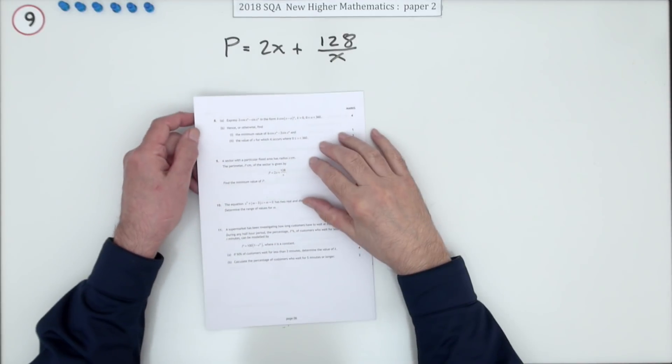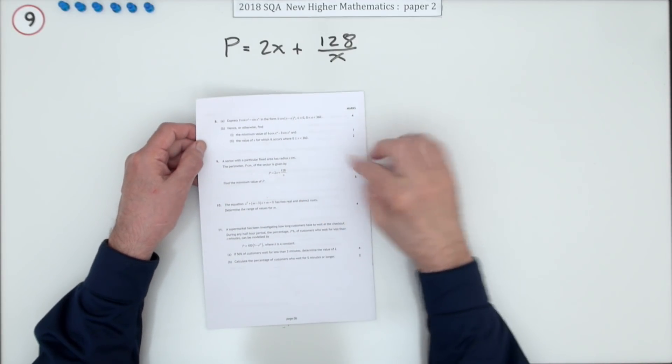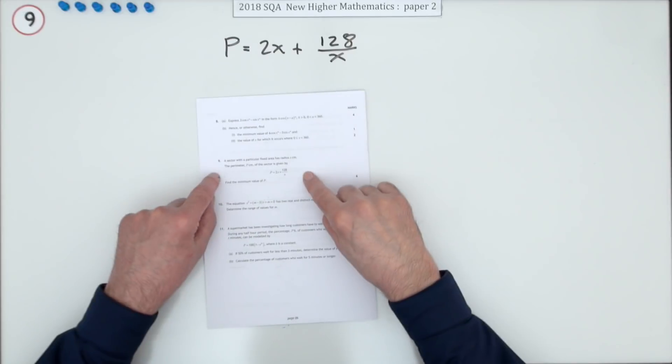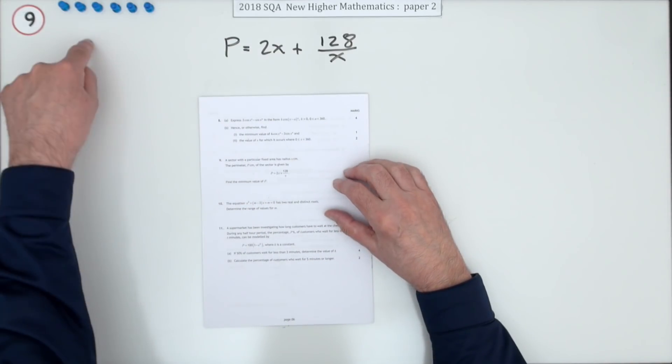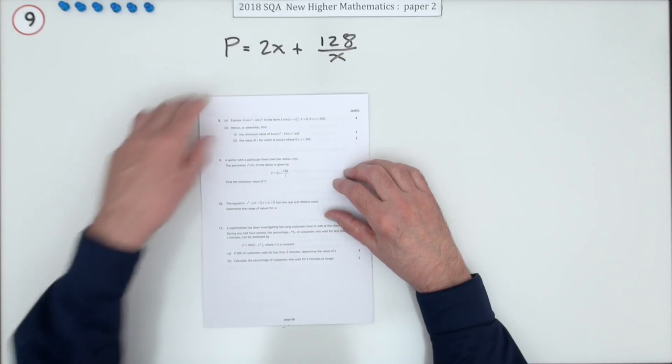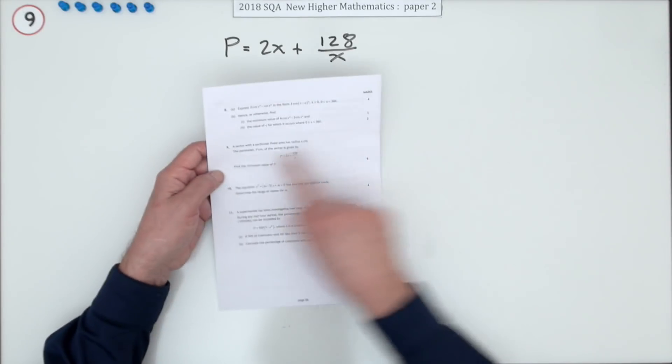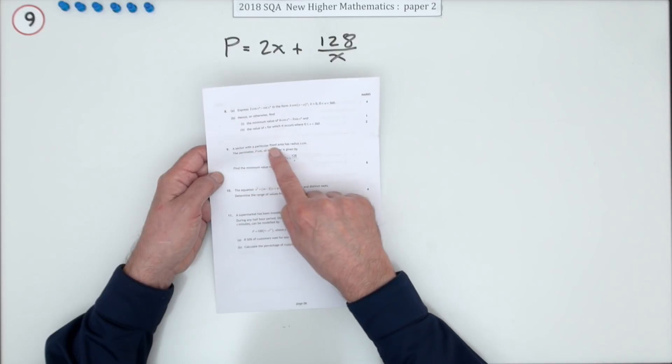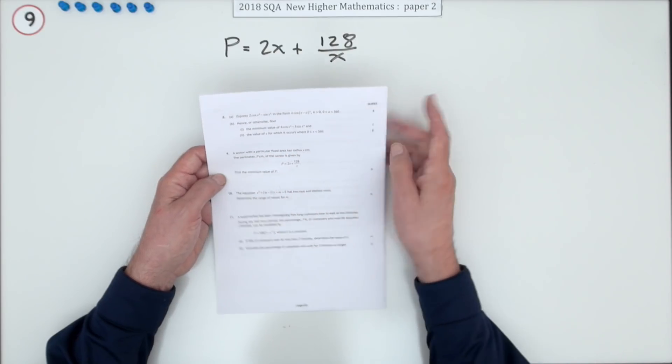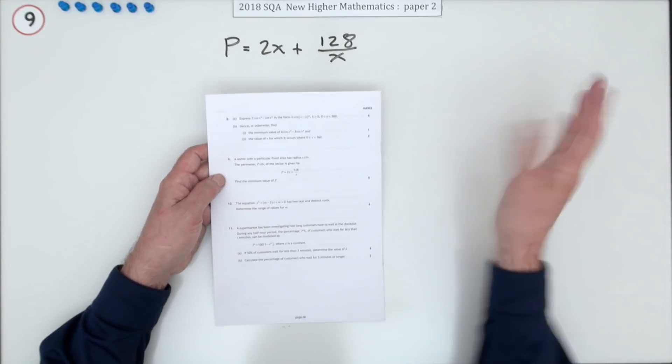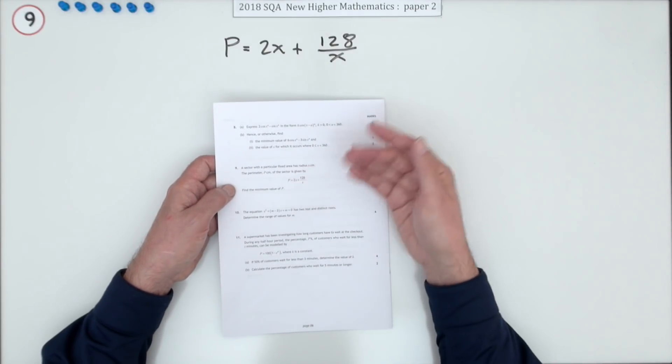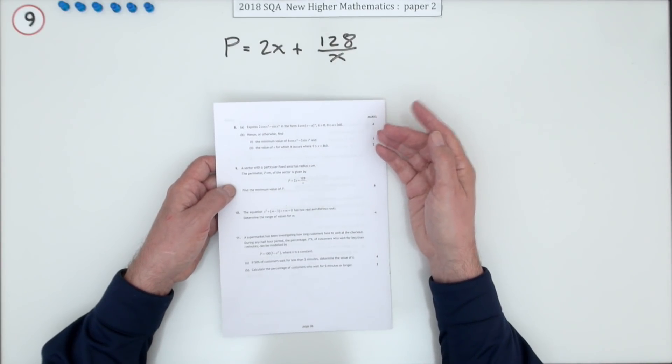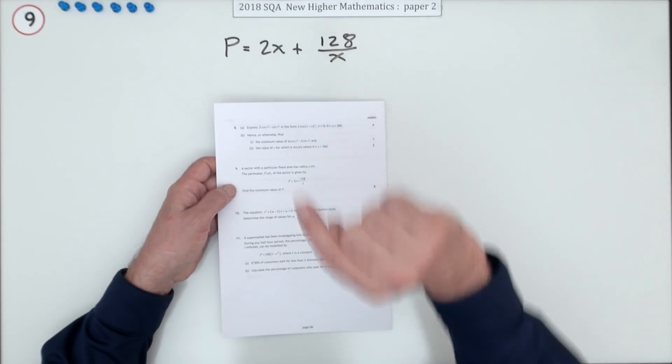So number nine then from the 2018 Higher Maths Paper 2, six mark question, optimisation. Except it's only a one part optimisation. Normally there's a part A and a part B. In part A it would describe the situation: a sector with a particular fixed area has radius X centimetres, and then it would be hence show that the perimeter is given by this. Whereas here it just starts with the perimeter P of this sector is given by this.